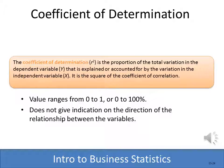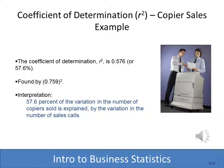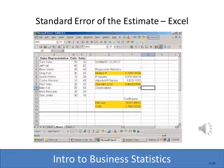Another variation of R is the coefficient of determination, represented as R squared. It is the proportion of total variation in the dependent variable that can be explained by the independent variable, ranging from 0 to 1. With our copier example, R was 0.759, so R squared is 0.576 — meaning 57.6% of the variation in copiers sold can be explained by the variation in the number of sales calls. Excel computes R squared automatically in the regression output.